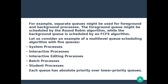Let's take an example. The first queue might be used for foreground and background processes. There are two queues: one queue will execute a foreground process, and the other is the background process. The foreground process might be scheduled by the round-robin algorithm, while the background queue is scheduled by first-come-first-served.